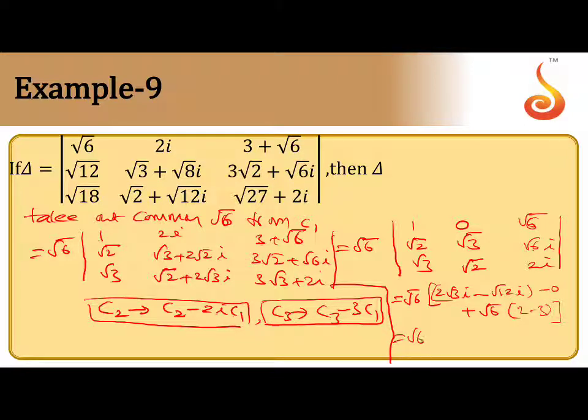We can simplify: √6(2√3 - √12), both are same, cancel. 0 - √6. Finally, what you get? -6. So -6, what number? Integer.